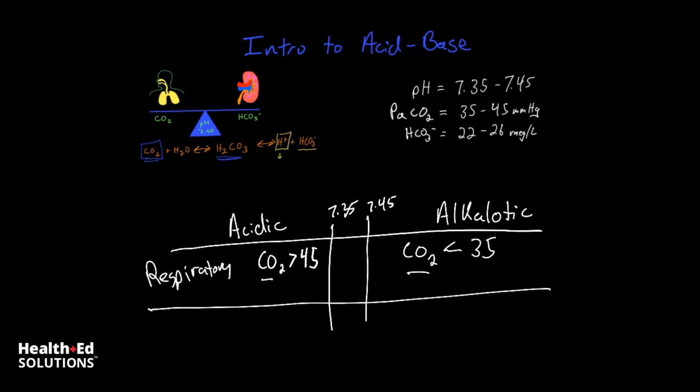And then in terms of metabolic, we are going to look at the HCO3. So it's acidic if the HCO3 or the bicarbonate is less than 22. And it's going to be basic if the bicarbonate is greater than 26.